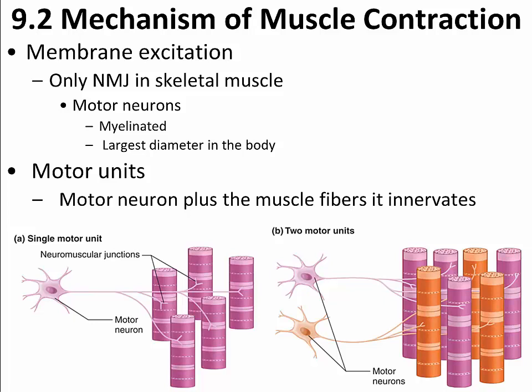Some motor units are apparently as small as 10 muscle fibers. It's much more common to have much larger motor units in areas of the body where we have very large muscles that cannot be controlled extremely precisely. Your quadriceps would be a good example — the muscles on the front of your leg just above your knee. The motor units in your quadriceps often contain over 1,000 muscle fibers, meaning one motor neuron connects to 1,000 muscle fibers.